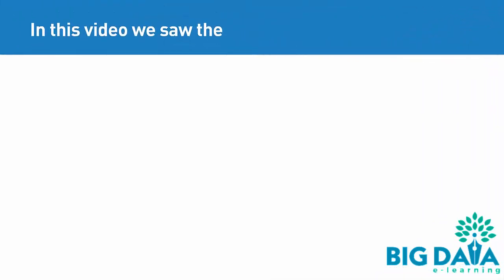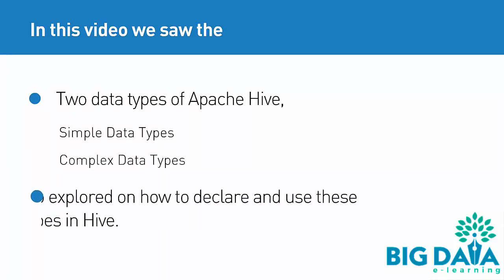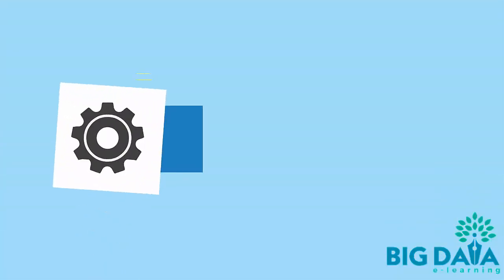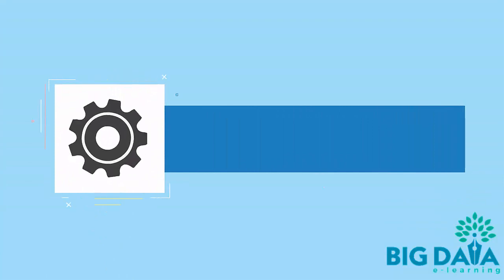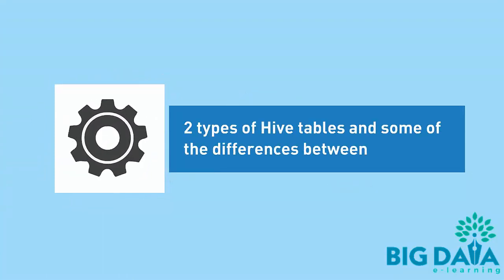In this video, we saw the two data types of Apache Hive: simple data types and complex data types. We also explored how to declare and use these data types in Hive. In the next video, we will learn about the two types of Hive tables and some of the differences between them. See you in the next video.